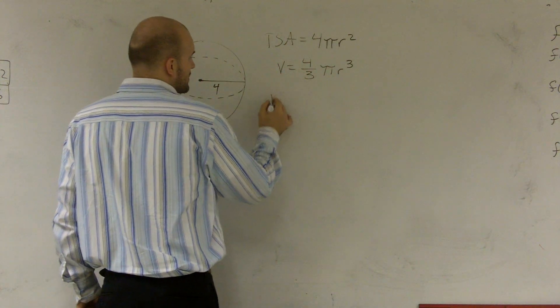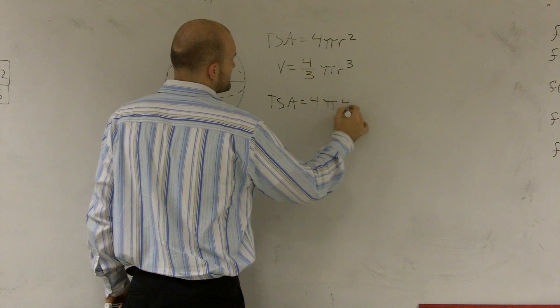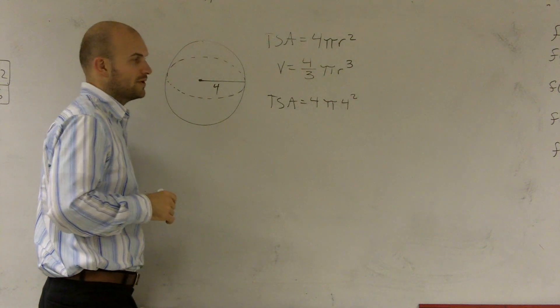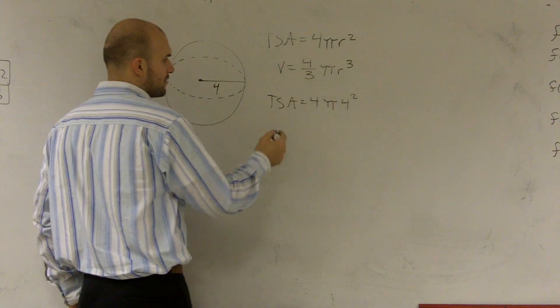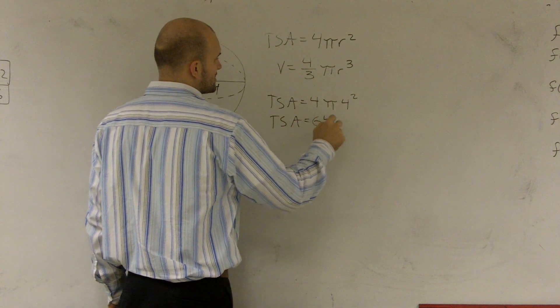I'll leave my answers in terms of pi. But the total surface area is going to equal 4 times pi times 4 squared. So 4 squared is 16. 16 times 4 is 64. So my total surface area equals 64 pi.